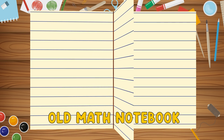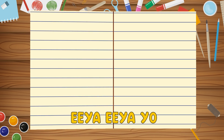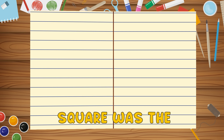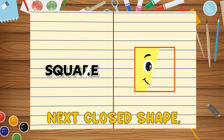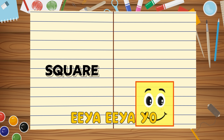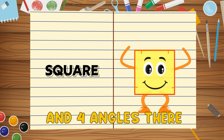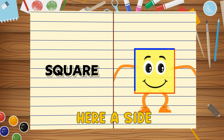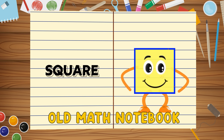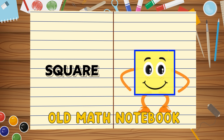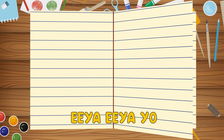Old math notebook had some shapes, E-I-E-I-O. Square was the next close shape, E-I-E-I-O. With four corners here and four angles there, here a side, there a side, it had four sides. Old math notebook had some shapes, E-I-E-I-O.